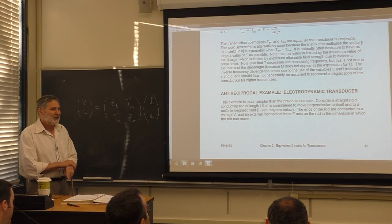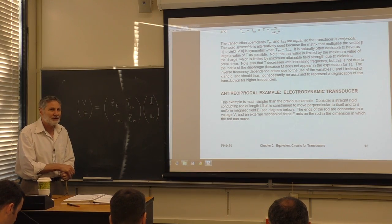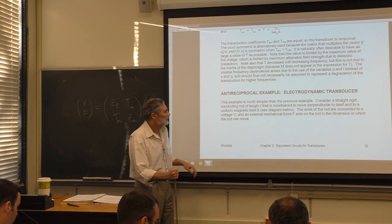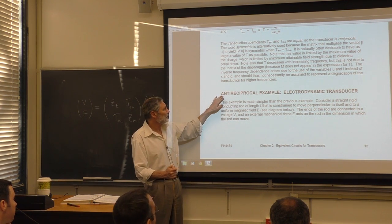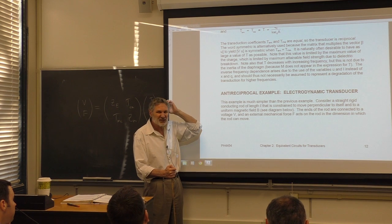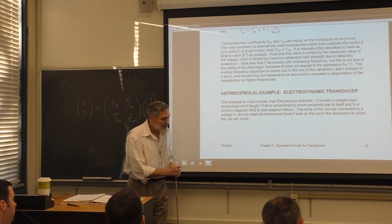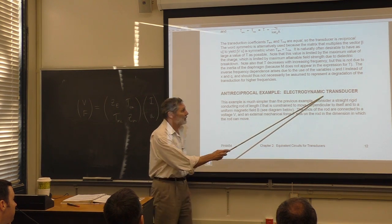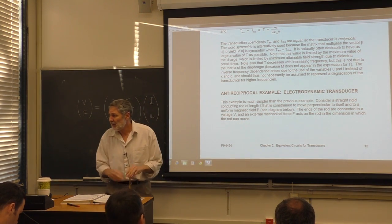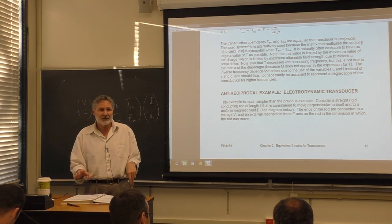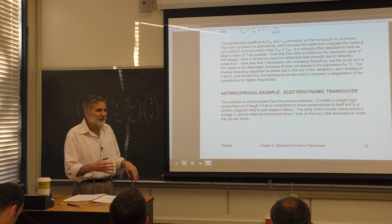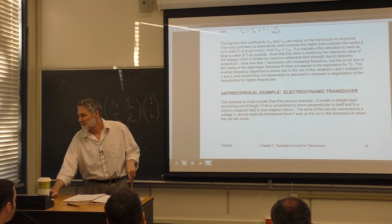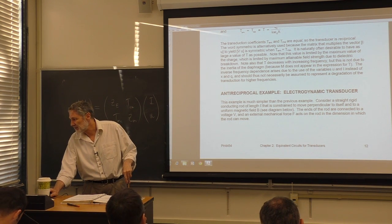The electrostatic case is an example of a reciprocal transducer. Another possibility is the anti-reciprocal case, and the standard example is the electrodynamic transducer — specifically a conductor moving in a magnetic field.